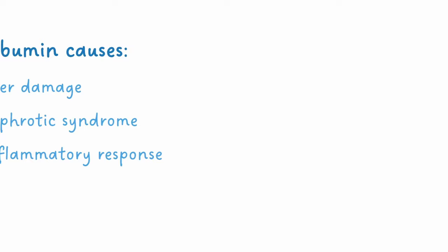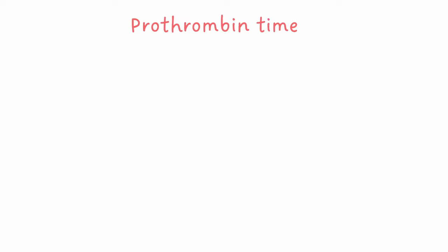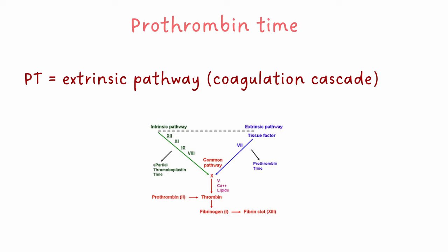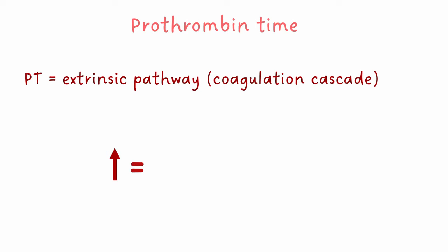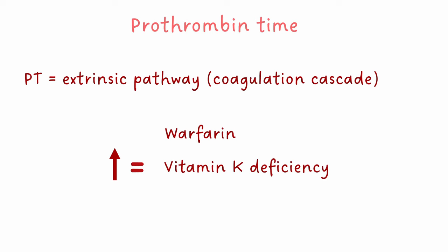Finally, prothrombin time is a measurement of how long our blood takes to clot. More specifically, it looks at the clotting factors in the extrinsic pathway of blood coagulation. PT can be high if a patient takes warfarin, which means the drug is working. Also in vitamin K deficiency and liver damage.